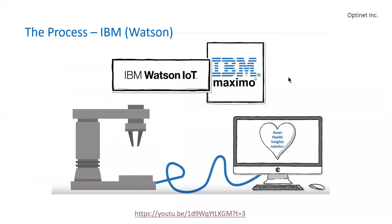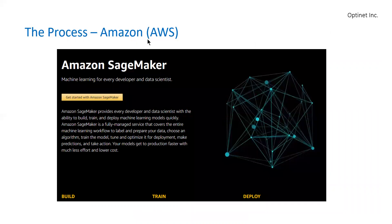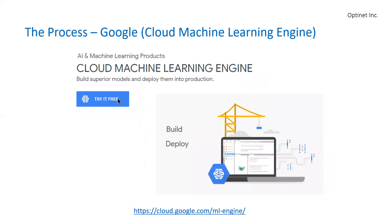To get started, we can choose any one of these providers. IBM provides it on Watson, offering connectivity through Maximo between the machine and the cloud. Amazon provides an Amazon Web Services solution. There is the process of building, training, and deploying models — you click on that and you get started. Google also provides free trials within the cloud machine learning engine where you build it and deploy it.